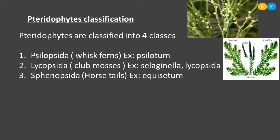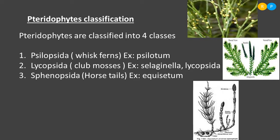The third class is Sphenopsida, commonly known as horse tails. They are called horse tails because their branches resemble the tail of a horse. Sphenopsida members usually form colonies — one plant reproduces and many plants grow in the same locality, making them appear very erect, like horse tails.